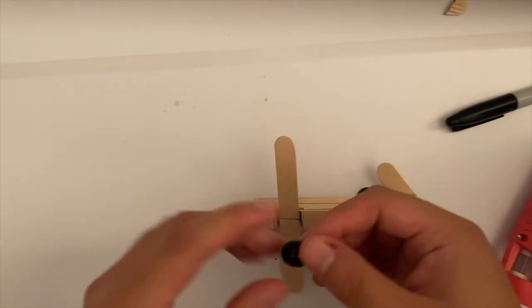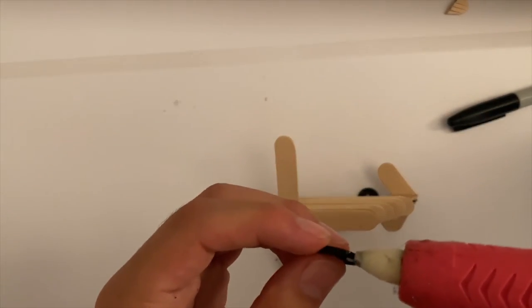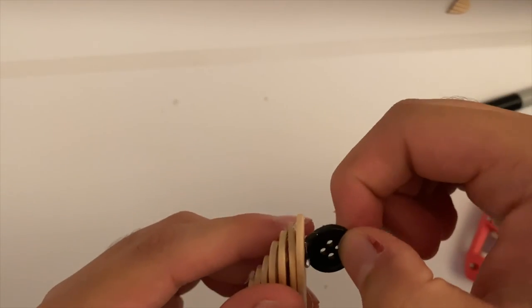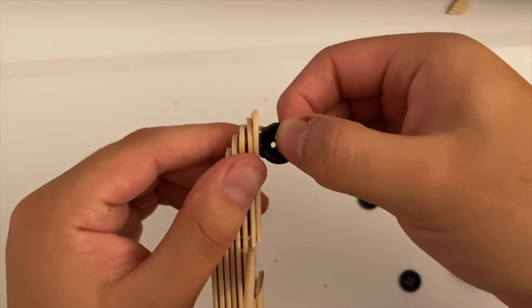Now we will be moving on to the wheels on the plane. We will be using buttons for the wheels. Be sure to apply pressure when placing them onto the plane to make sure they are secured in place.